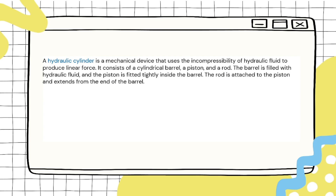A hydraulic cylinder is a mechanical device that uses the incompressibility of a hydraulic fluid to produce linear force. It consists of a cylindrical barrel, a piston and a rod. The barrel is filled with hydraulic fluid and the piston is fitted tightly inside the barrel. The rod is attached to the piston and extends from the end of the barrel.